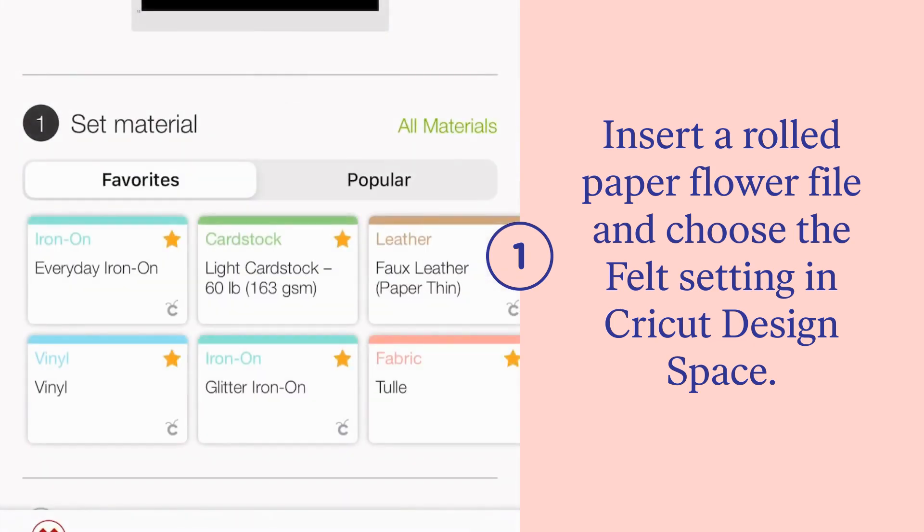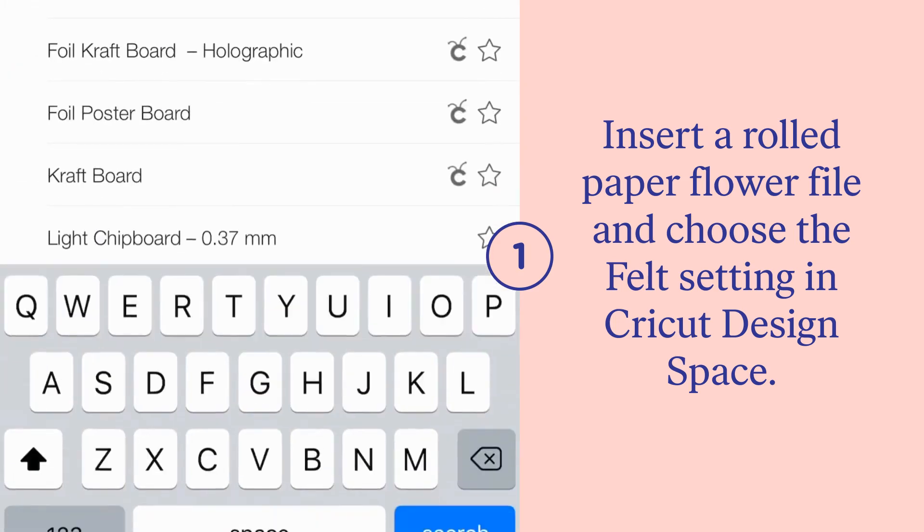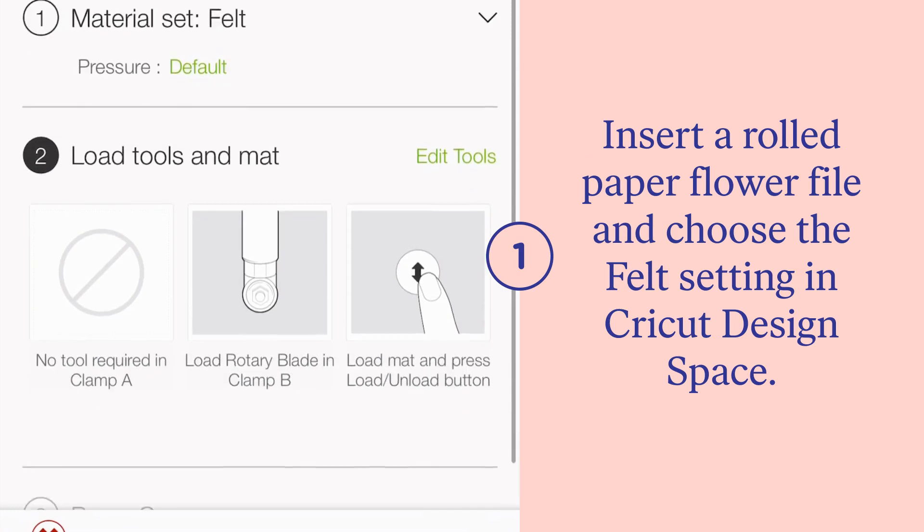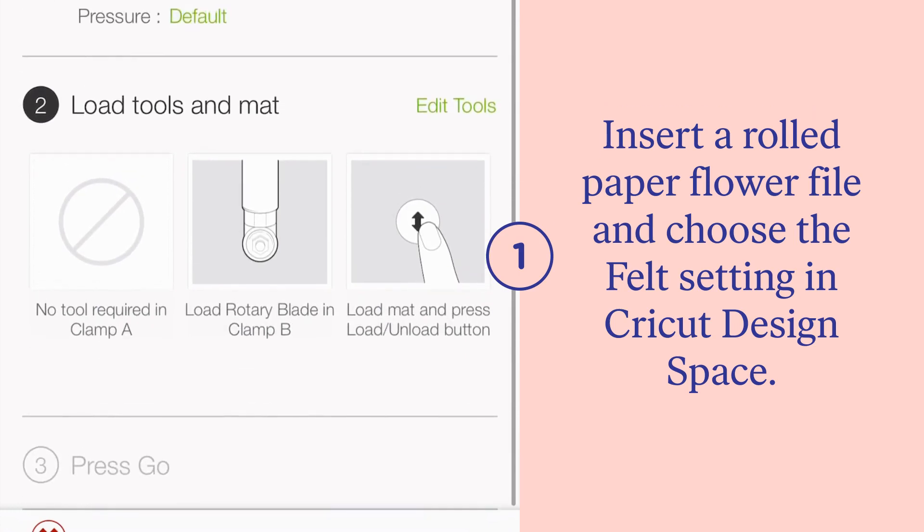Next, you need to pick your material setting. Under all materials, I chose just the regular felt setting. Then you'll see that I chose the rotary blade for this. I have not gotten the fine point blade to work, so I always choose the rotary blade.